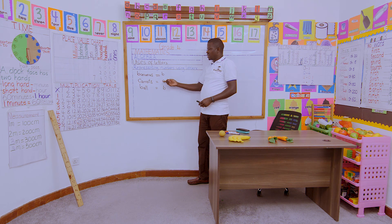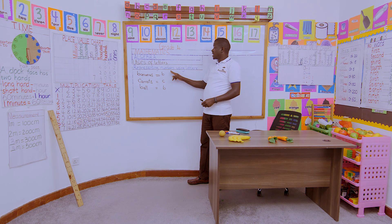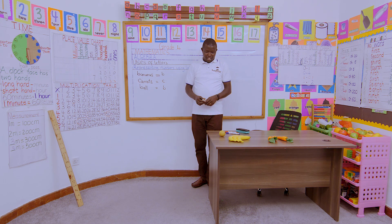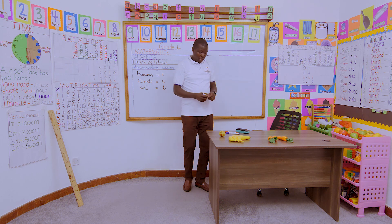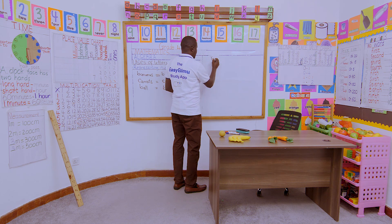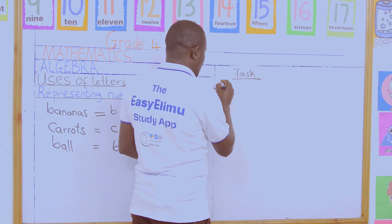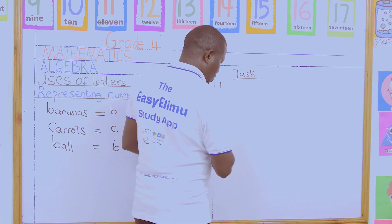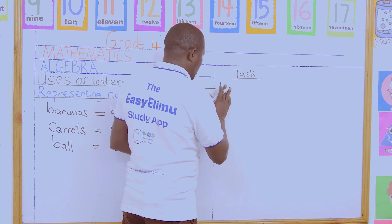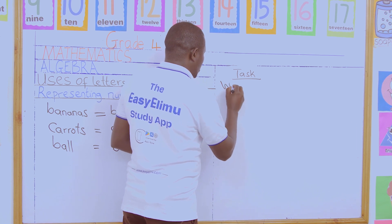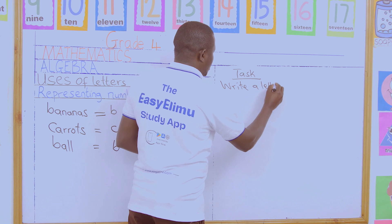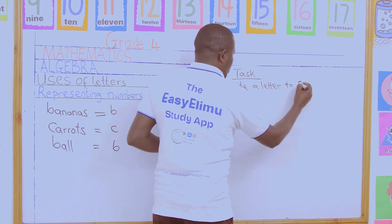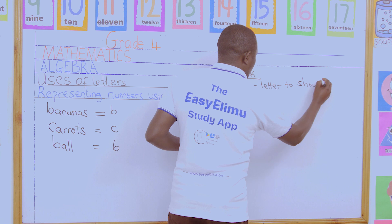To represent the balls, we say someone has B balls. The B and C are representing a number — they are representing a number. Now in our task for today, let us use letters to represent the following. Write a letter to show the objects.